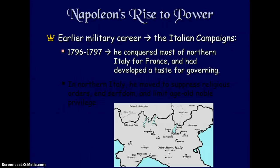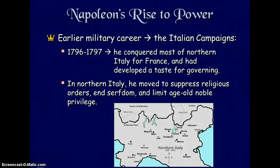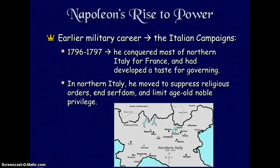In 1796 to 1797, he conquered most of northern Italy for France, and he had developed a taste for governing. In northern Italy, he moved to suppress religious orders and serfdom and limit age-old noble privilege.